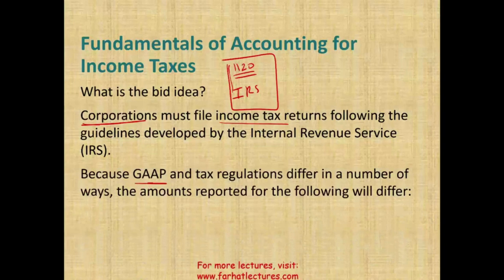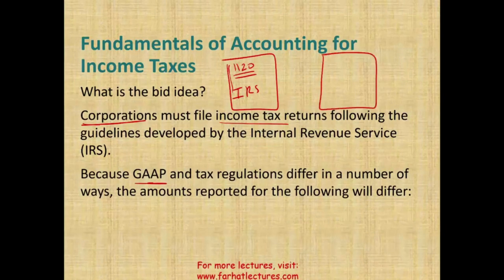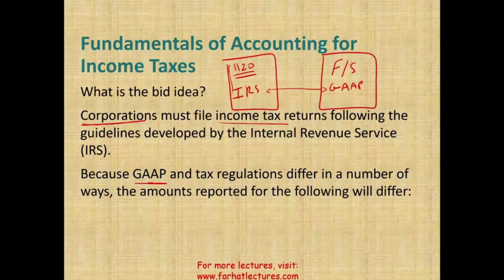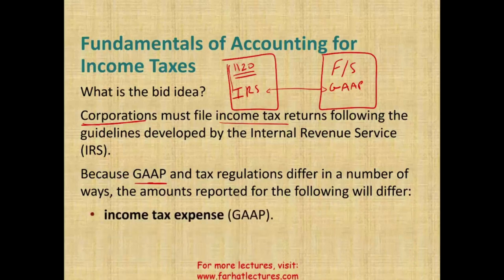On the other hand, companies have to prepare their financial statements for external users, and therefore they must use generally accepted accounting principles — GAAP. Because there are differences between GAAP and IRS rules, if they were the same, we wouldn't need this chapter. Since they differ, we have to account for that difference in terms of deferred tax asset or deferred tax liability.